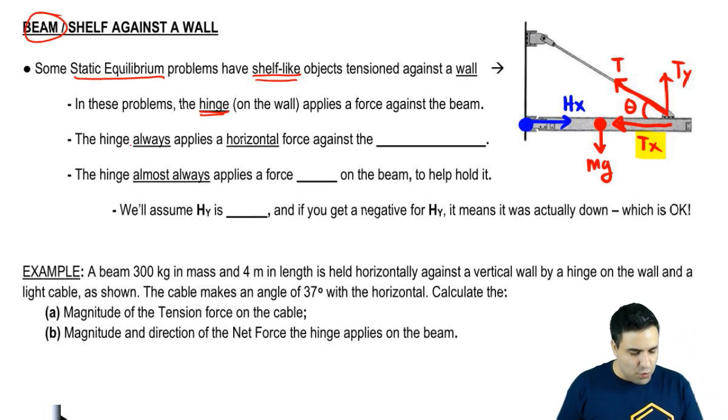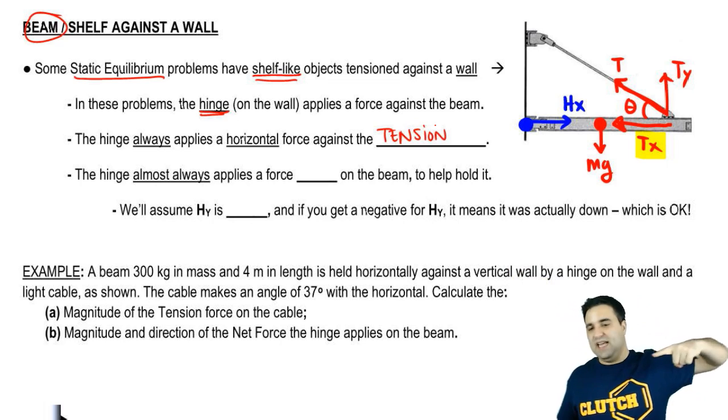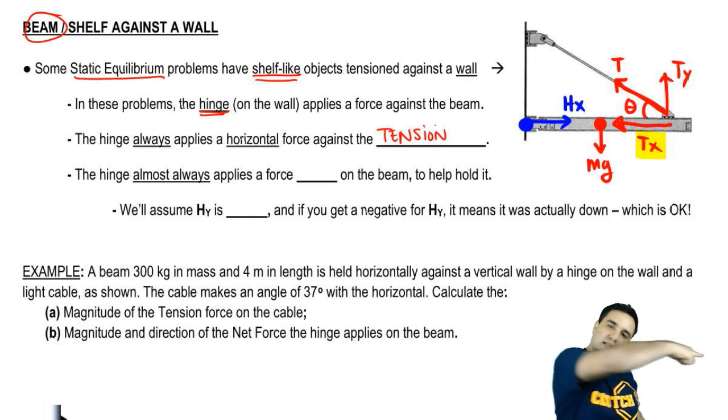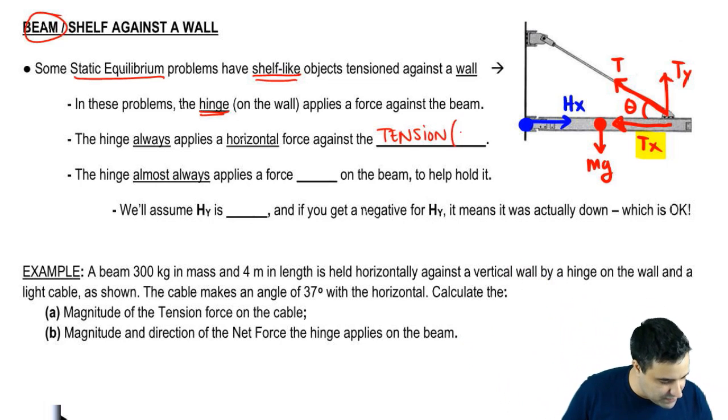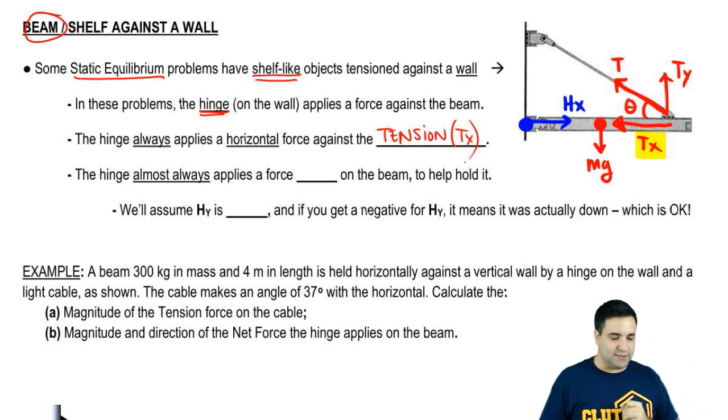We're going to call this Hx because it's the hinge force on the X-axis. The hinge will always apply a horizontal force against the tension. Tension is going like this, which means Tx is like this, which means Hx is like this. More specifically here, I can say against Tx.